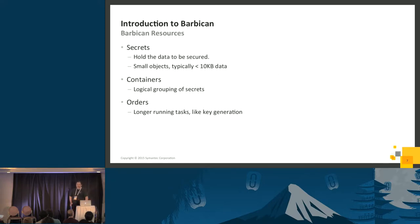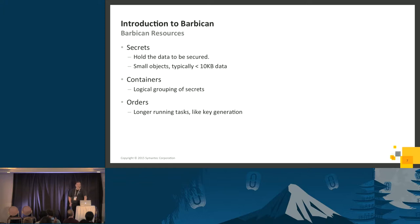Barbican basically has three types of resources that it manages. You have secrets, which actually contain the data you want to protect — typically small bits of arbitrary data. Barbican doesn't care what you put into it, but out-of-the-box has a 10 kilobyte limit. You don't want to use this as a large encrypted object store. If you have large objects to encrypt, encrypt them, throw them into Swift, and then store the key in Barbican.